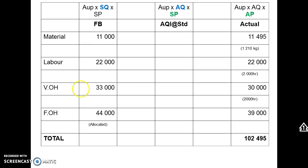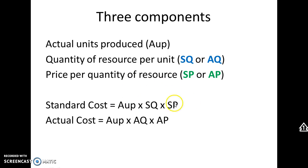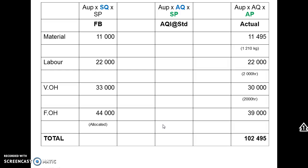The problem is the difference between the flexible budget column and the actual column — there are two differences: actual quantity versus standard quantity, and actual price per kilogram versus standard price per kilogram. A cost has three components: units × quantity × price. To isolate the quantity difference, we hold the price constant at standard price. Everything remains at actual units of 1100, but we add a middle column at standard price with the actual quantity used.